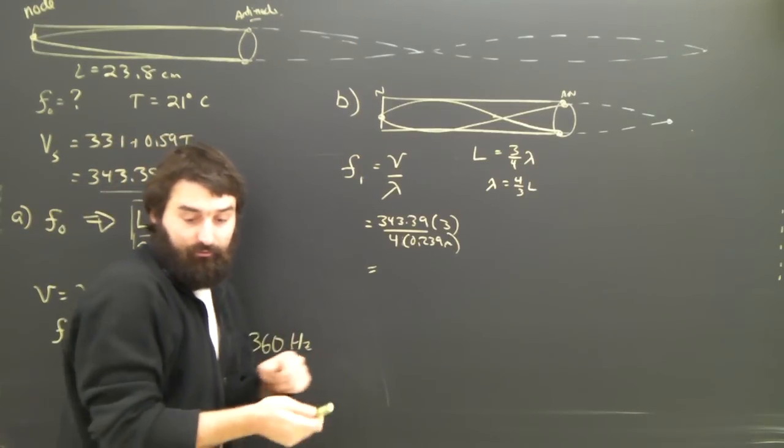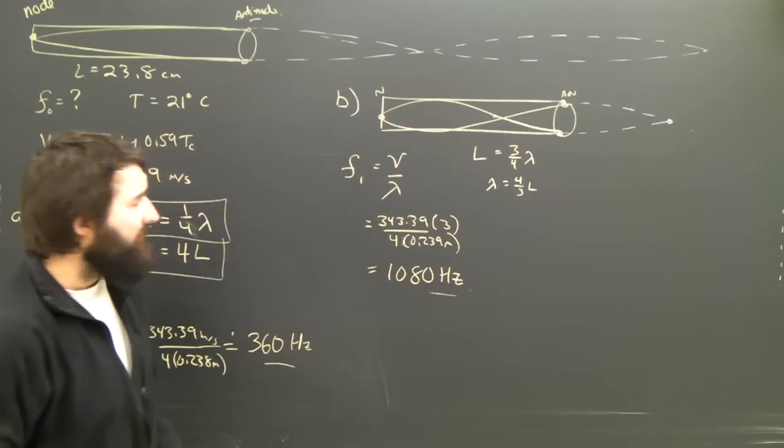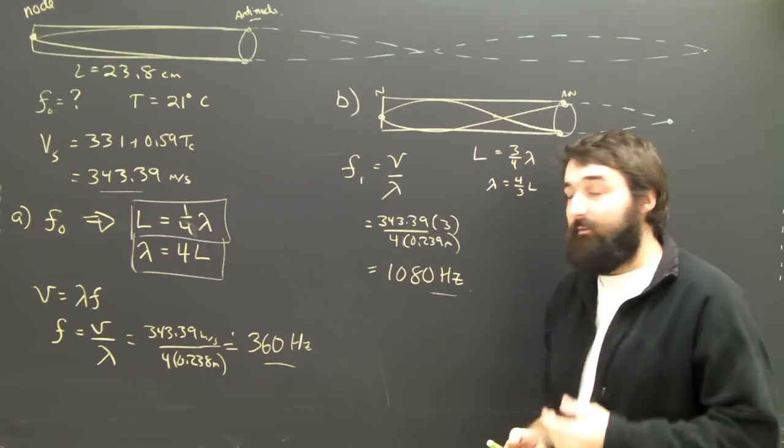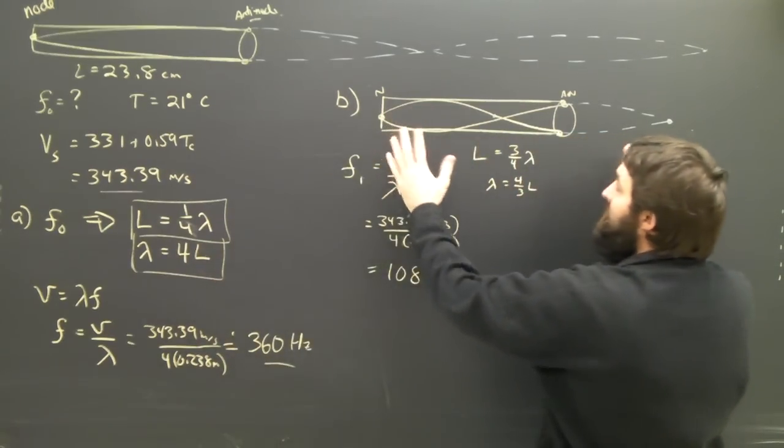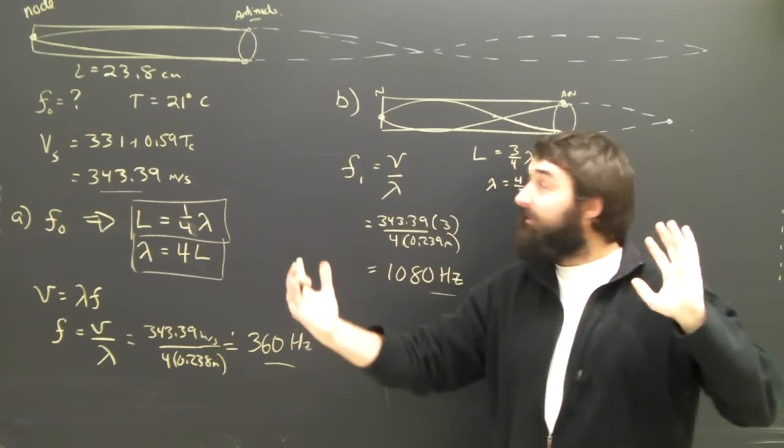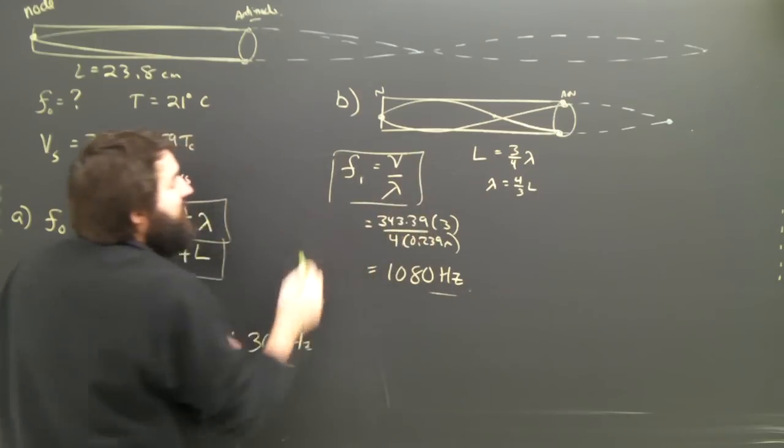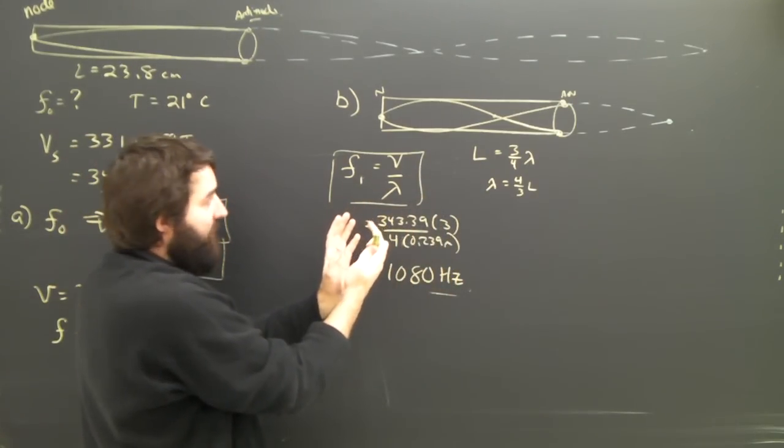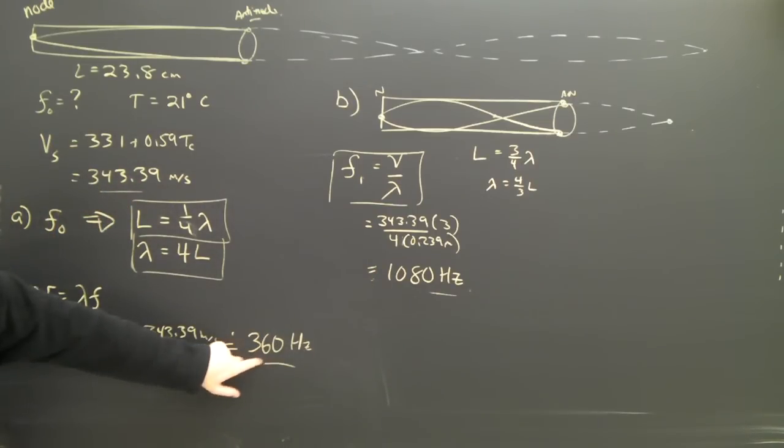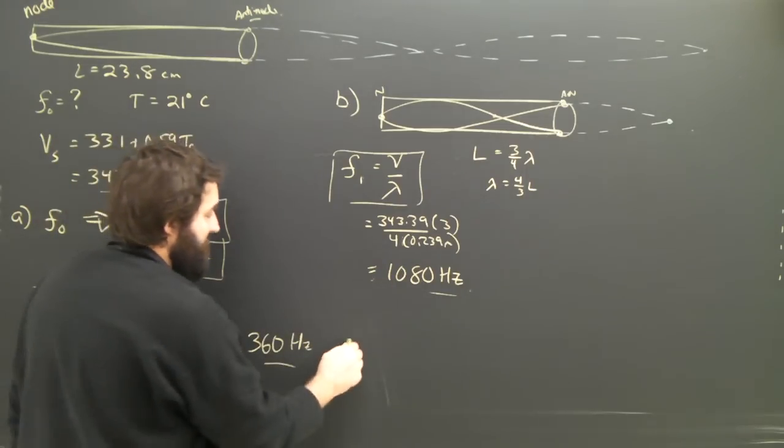Grabbing my calculator, I dump in all my numbers and I get about 1080 hertz. And the question I ask myself, does that make sense? Because I like to make sure I haven't made any silly mistakes. If the wavelength goes from four L down to four thirds L, the wavelength is decreasing. It's getting smaller by a third. It's decreasing by a factor of three. And if we look at the universal wave equation, lambda is on the bottom. If it gets smaller by three, then frequency should get bigger by three. So we would expect F1 to be three times F0, the fundamental frequency, which it sure is. 360 times three will give us 1080.